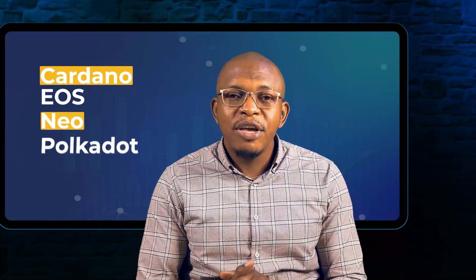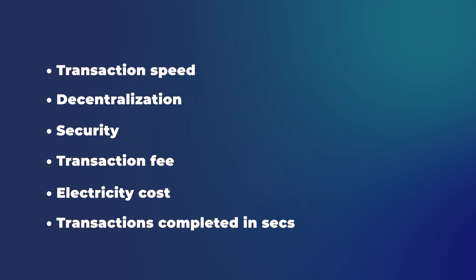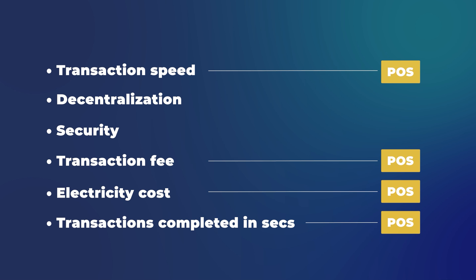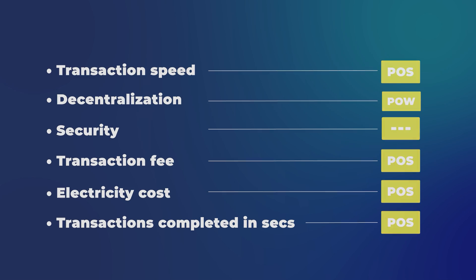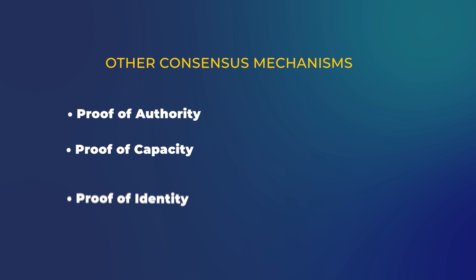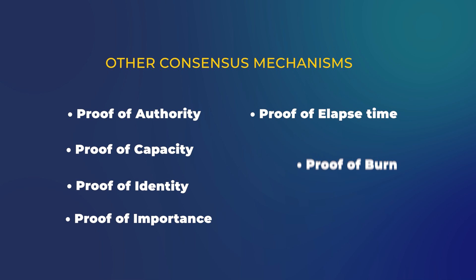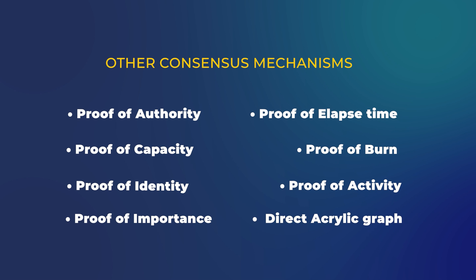All proof of stake consensus mechanisms include Cardano, EOS, NEO, Polkadot, and so on. In summary, to compare the two consensus mechanisms, we can look at transaction speed, decentralization, security, transaction fee, electricity cost, and number of transactions per second. Proof of stake beats proof of work in having a lower transaction fee, negligible electricity cost, and more transactions per second. Decentralization can be given to proof of work, and security is highly debatable. Besides these two, other consensus mechanisms include proof of capacity, proof of identity, proof of importance, proof of elapsed time, burn, activity, and directed acyclic graph.